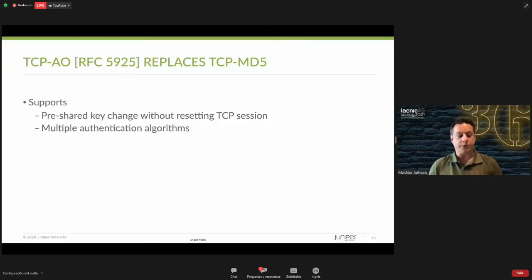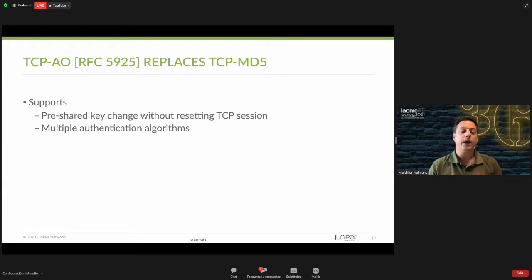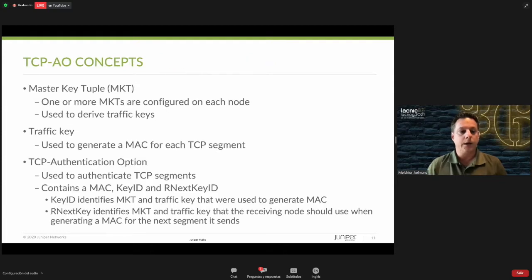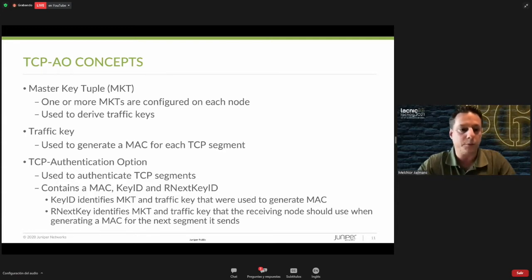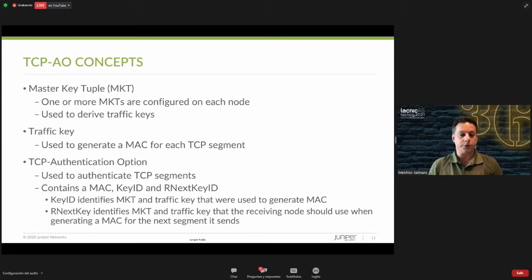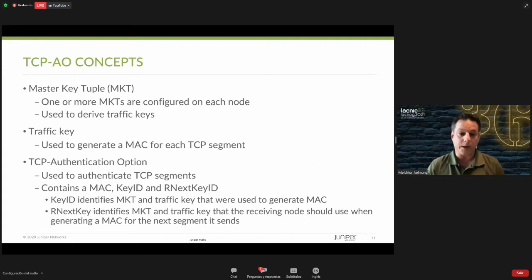The key motivations for TCP AO were: the option to have pre-shared keys and key rollover without resetting the TCP session, and support for multiple and newer authentication algorithms. The concept of TCP AO is very much the same as MD5. You configure on both sides one or multiple master key tuples (MKTs) — the MKT is basically your pre-shared key. You use those to derive the traffic keys, and the traffic keys are used to generate the MAC for each TCP segment.